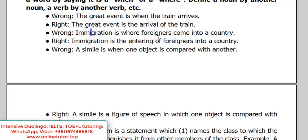'Immigration is where foreigners come into a country.' You see — 'immigration is what?' We should have something nominal here, not 'when,' 'where,' or 'to do.' So the right variant is: 'Immigration is the entering of foreigners into a country,' or perhaps 'Immigration is the phenomenon or the process of entering the country by foreigners.' But not 'when,' 'where,' or 'to enter a country.'